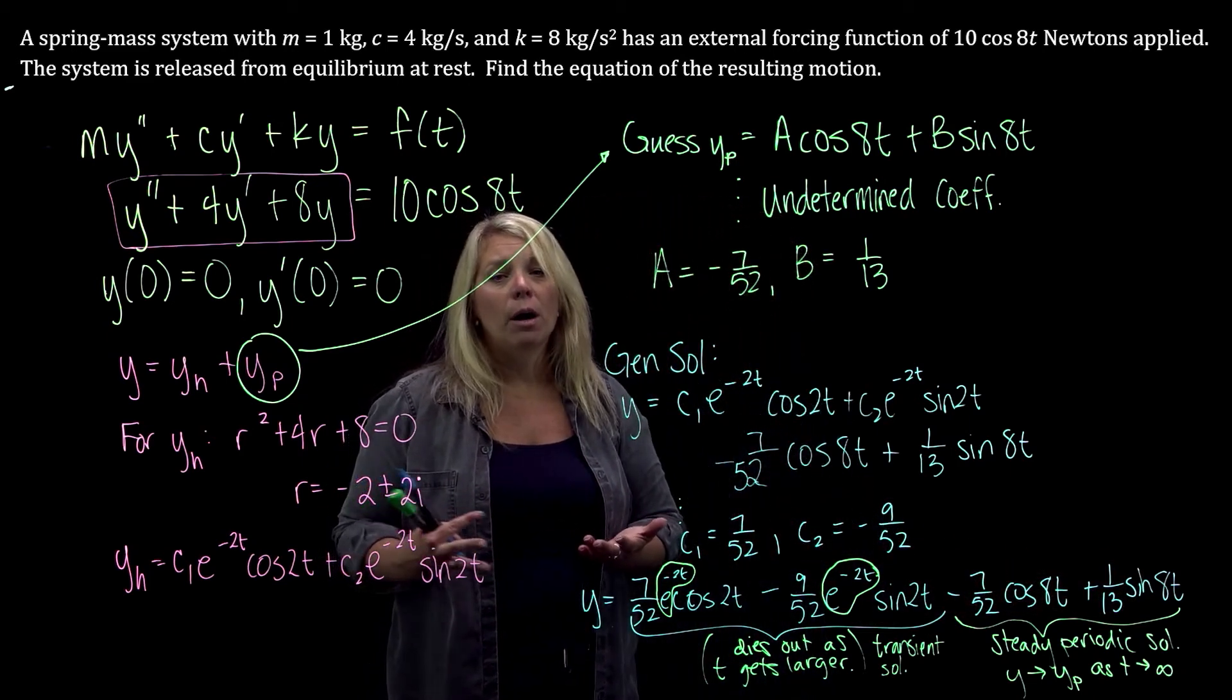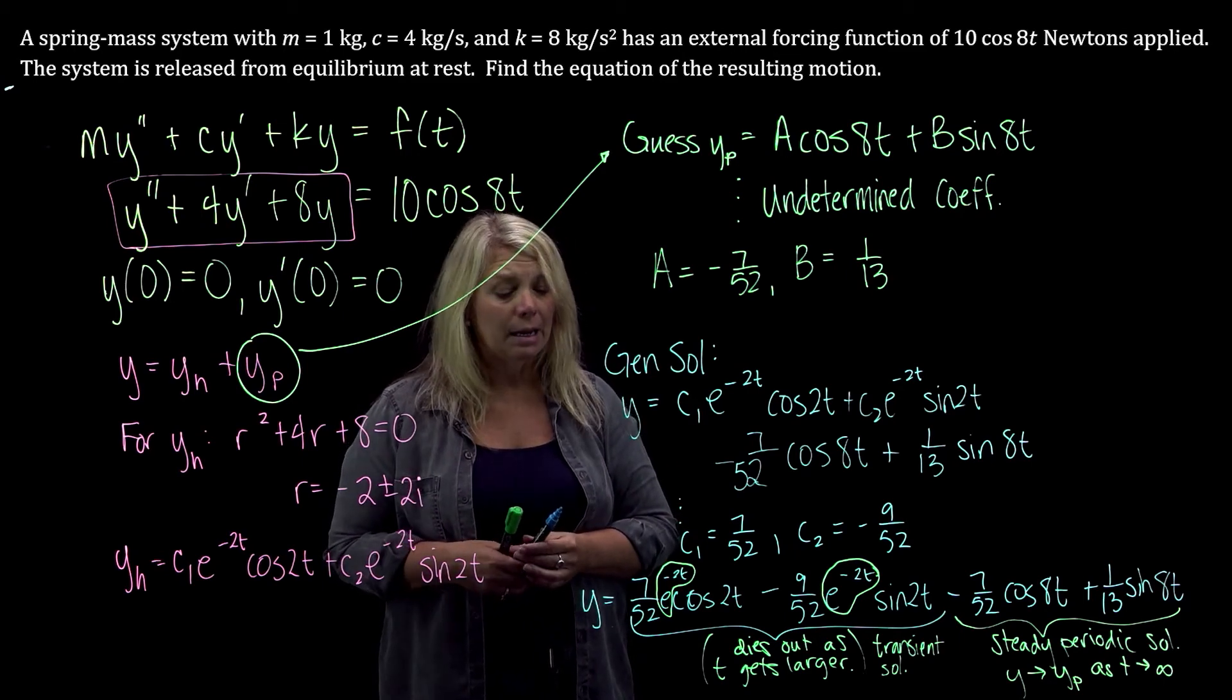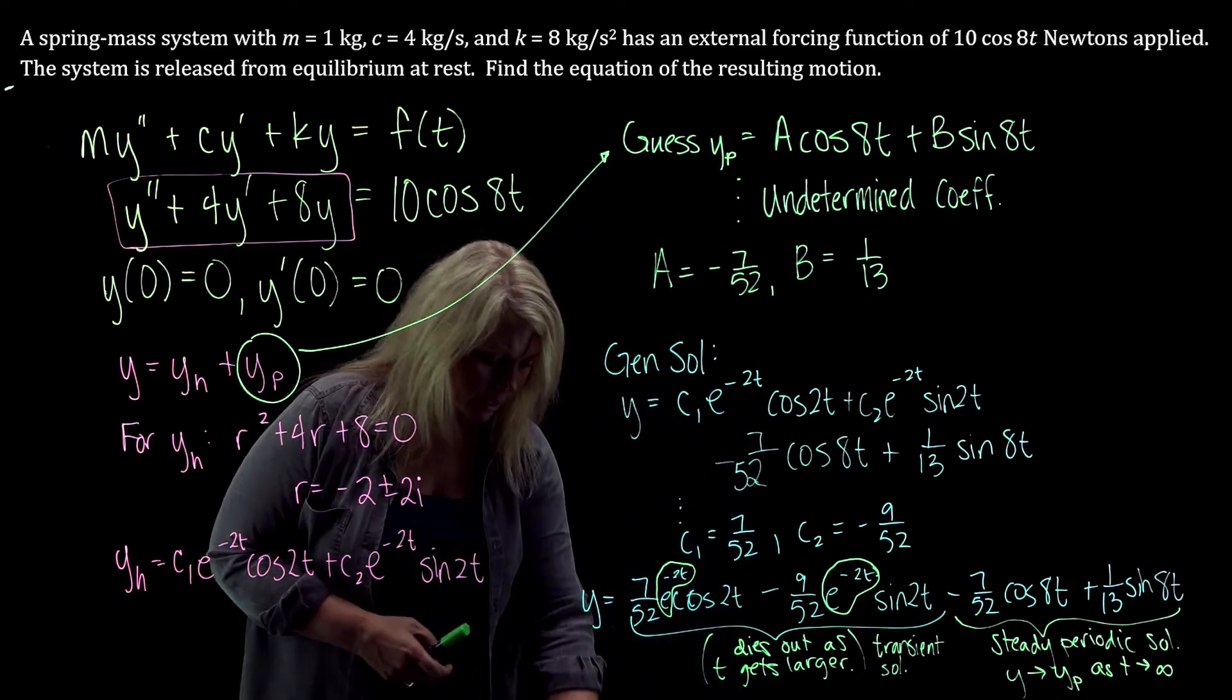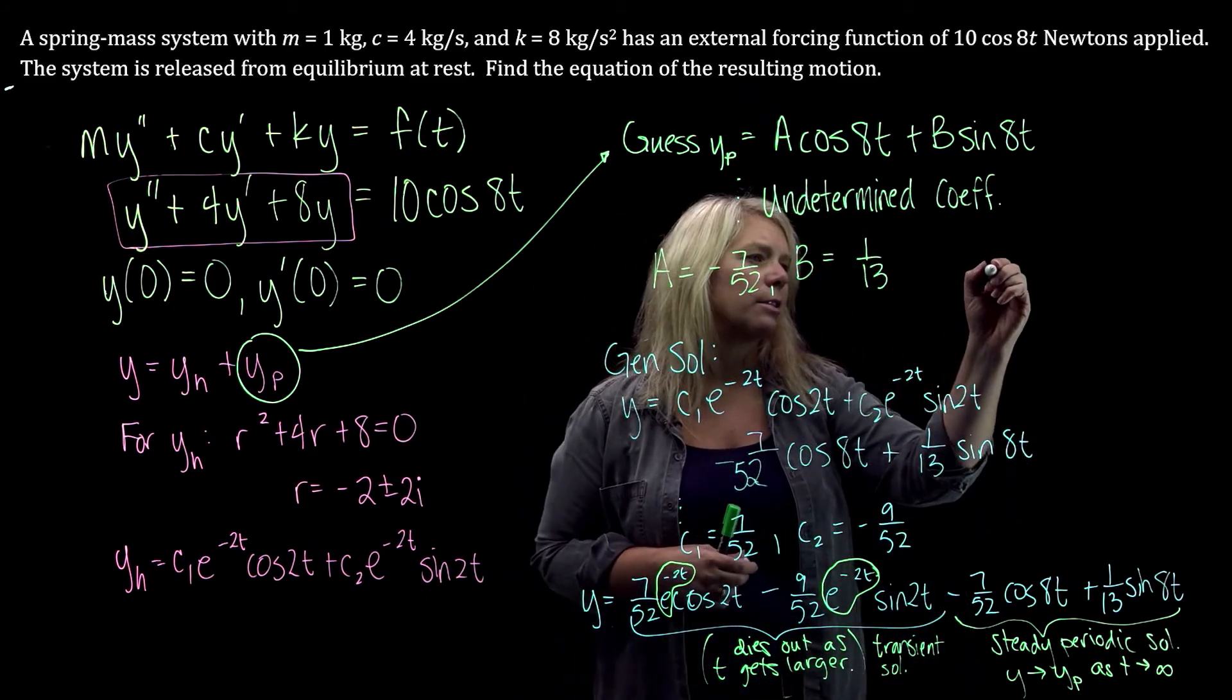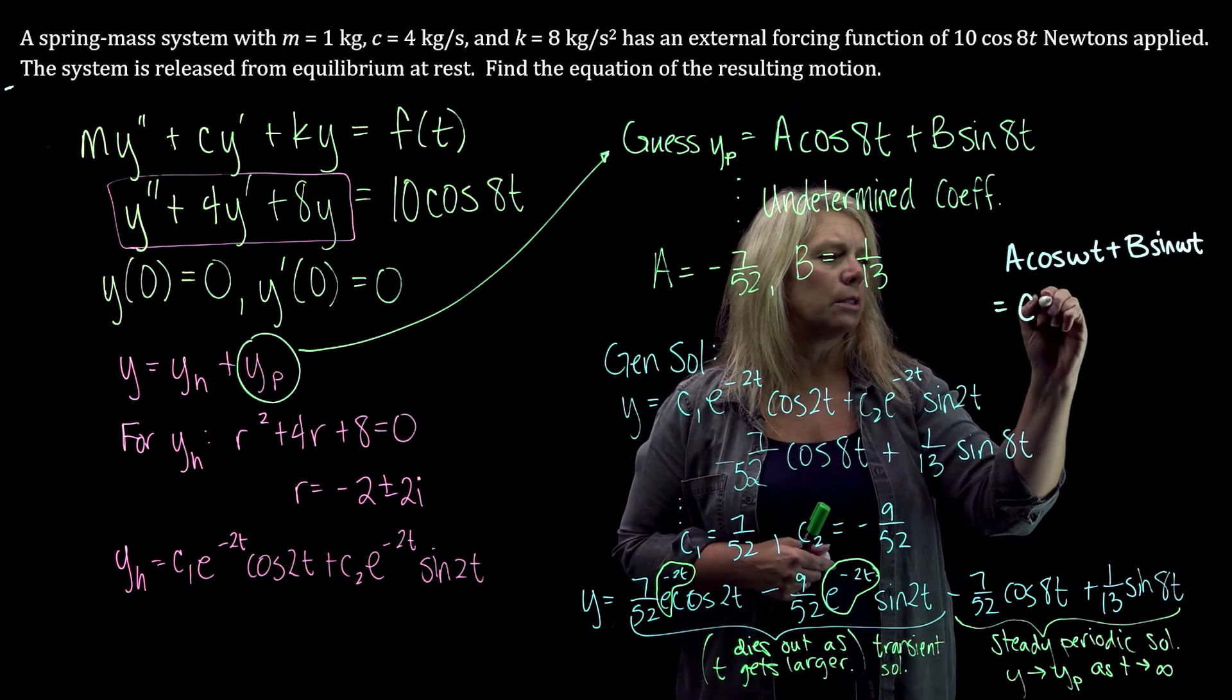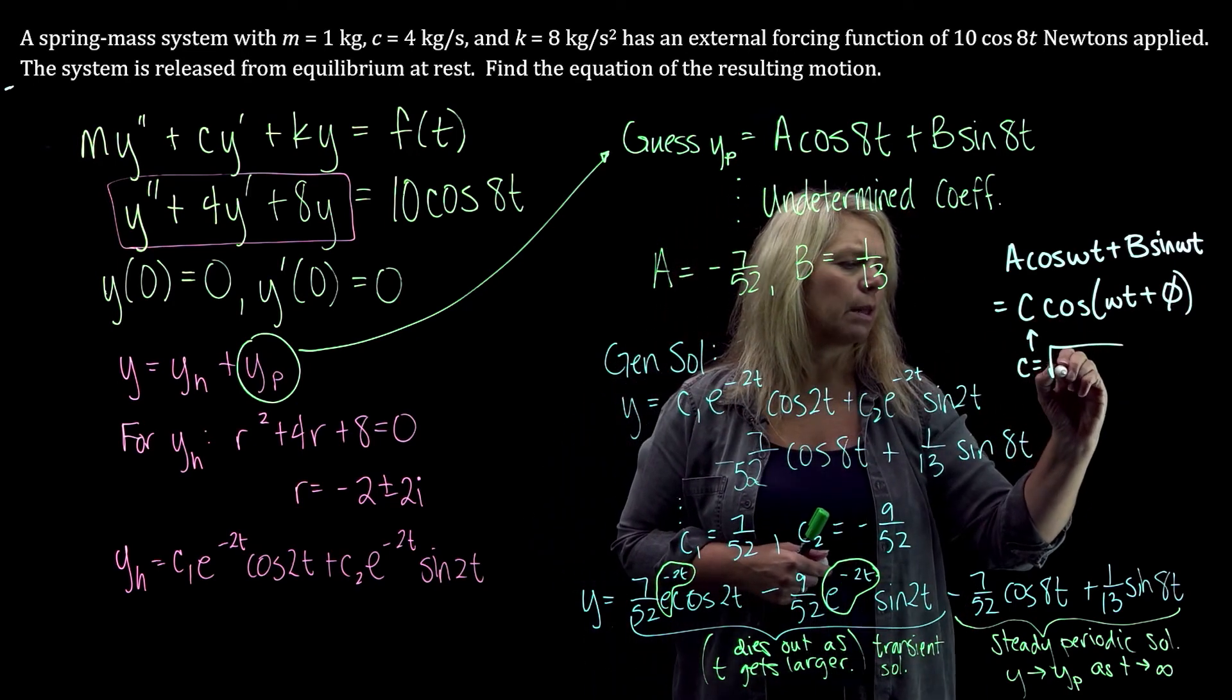In the MyMathLab homework, when it asks for solutions, sometimes it will accept solutions like this. Sometimes it wants you to use some trig identities to rewrite some things in terms of a slightly different form. So just be aware of that. That occasionally in the MyMathLab homework, it wants you to use that trig identity which we had in our class notes that says a cosine of omega t plus b sine of omega t is equal to c cosine of omega t plus phi, where c is the square root of a squared plus b squared.